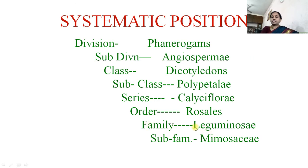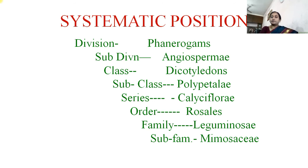In the system of classification proposed by Bentham and Hooker, Mimosaceae was included in the family Leguminosae and given the rank of subfamily. But nowadays it is treated as a separate family. Previously the name Leguminosae did not end in -aceae, and according to the International Code of Botanical Nomenclature, family names must end in -aceae. So now it has been given the rank of family Mimosaceae.